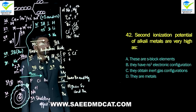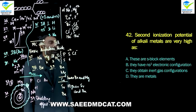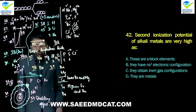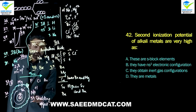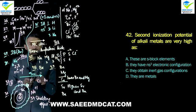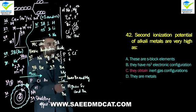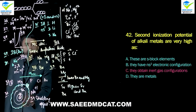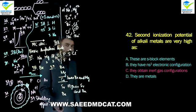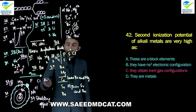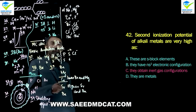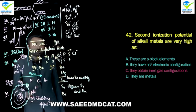Question 42: Second ionization potentials of alkali metals are very high because of what? When one electron is removed from an alkali metal, not only do the shells decrease, but also — charlie option — they obtain the noble gas electronic configuration. That stable noble gas configuration makes it very hard to remove the next electron, which is another reason why second ionization energy of alkali metals is very high.